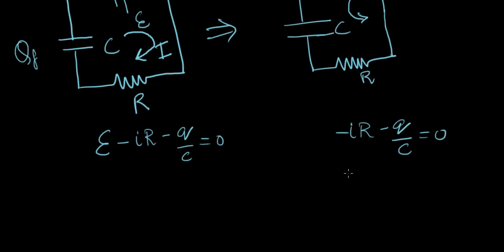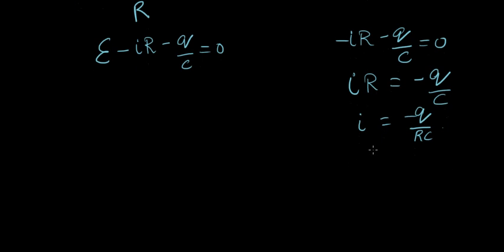If you rearrange this, it's IR equals minus Q over C, therefore I equals minus Q over RC. Just as we did in the previous lecture, put I as DQ over DT equals minus Q over RC.